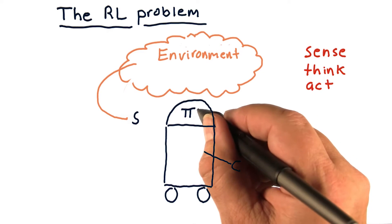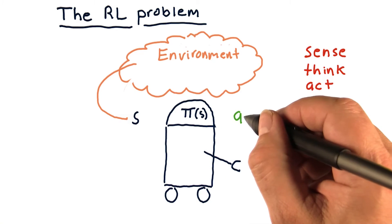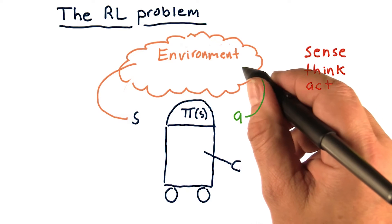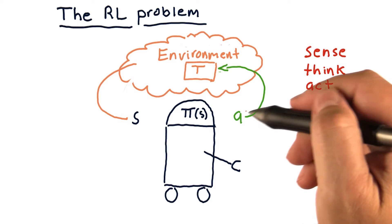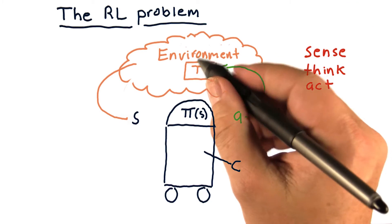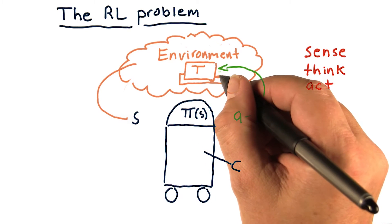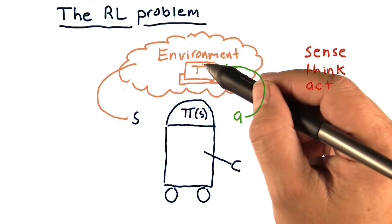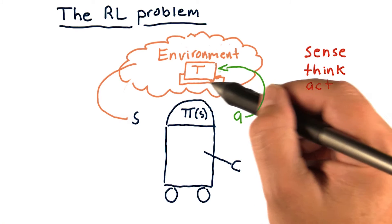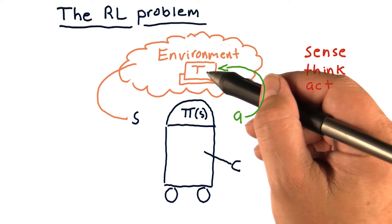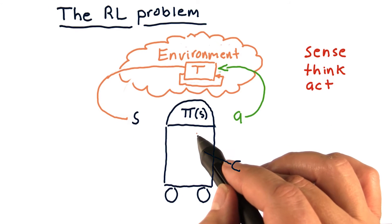The robot takes in the state S and then outputs an action, we'll call that action A, and it affects the environment in some way and changes it. This is a circular process. The action A is taken into the environment and the environment then transitions to a new state. T is this transition function that takes in what its previous state was and the action and moves to a new state. And that new state comes out back into the robot.